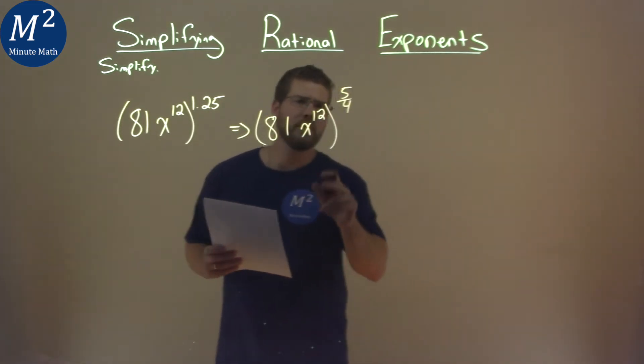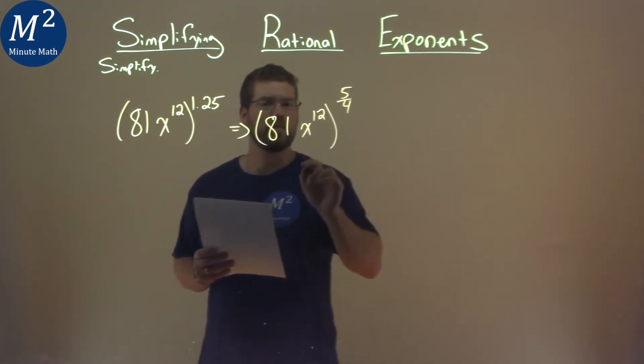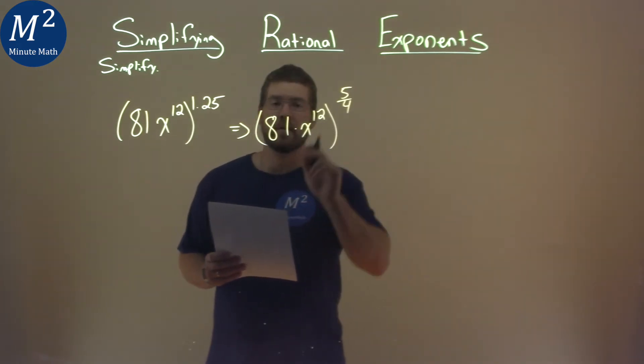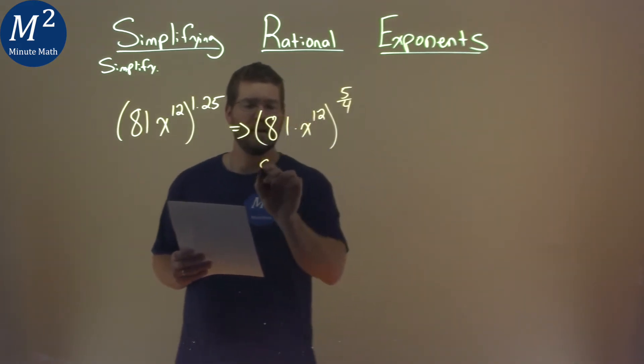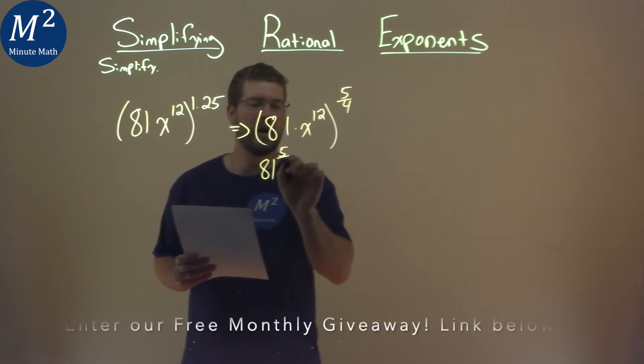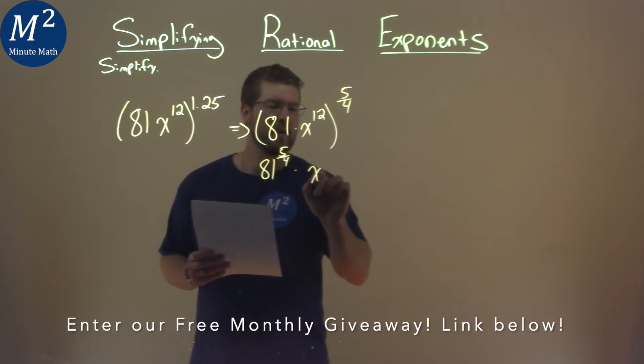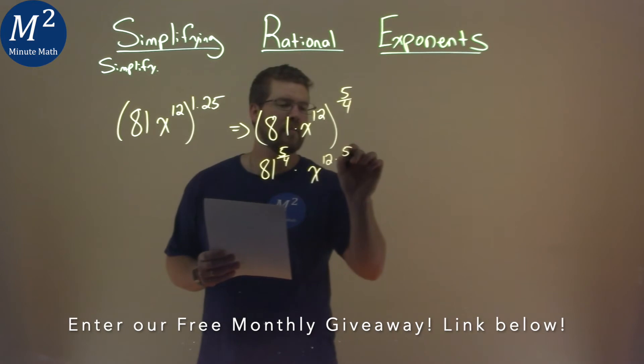We now can distribute this 5 fourths to both parts. Multiplication is separating 81 and the x to the 12th. So we have 81 now to the 5 fourths power, times x to the 12 times the 5 fourths power.